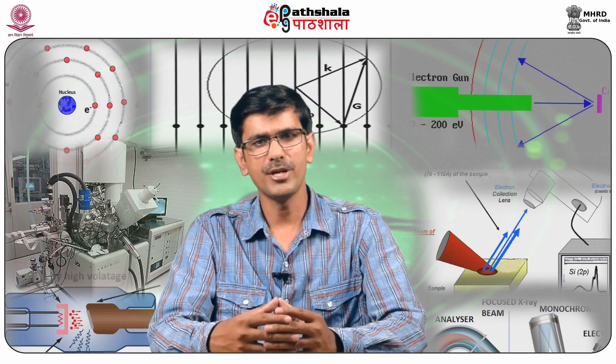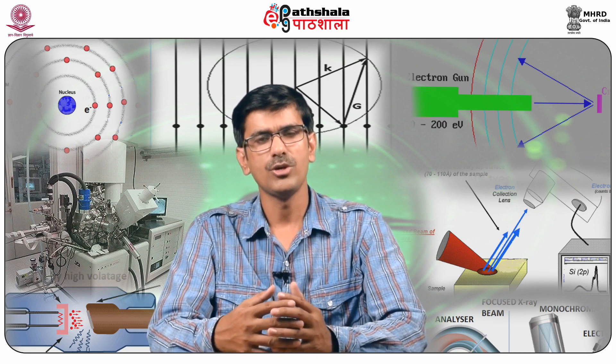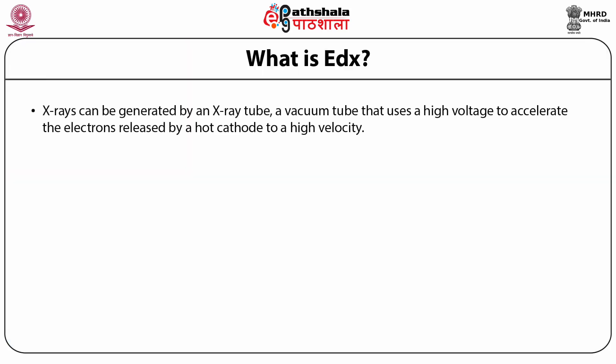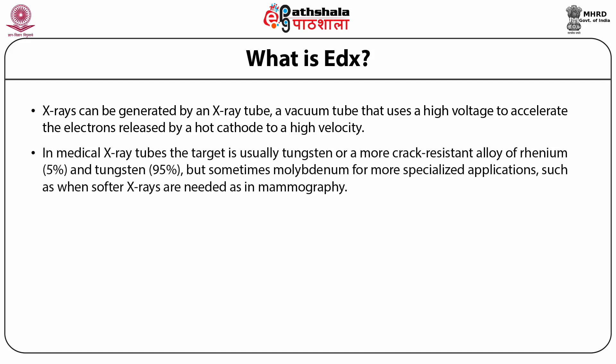Each element in the periodic table has a unique atomic structure that corresponds to a unique set of peaks. X-rays can be generated by an x-ray tube, which is a vacuum tube that uses high voltage to accelerate electrons released by a hot cathode to a high velocity. The high-velocity electrons collide with a metal target — the anode — creating the x-rays. In medical x-ray tubes, the target is usually tungsten or a more crack-resistant alloy of ruthenium (5%) and tungsten (95%).